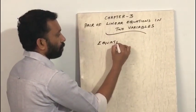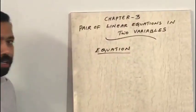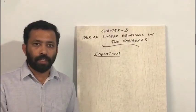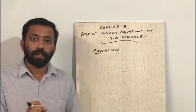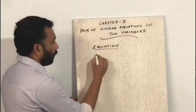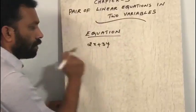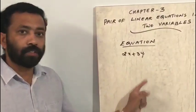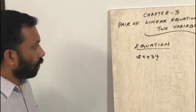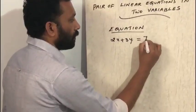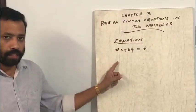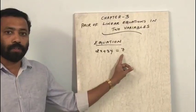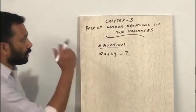An algebraic expression involving an equal to sign is called an equation. For example, 2x plus 3y is only an expression — it is not an equation. Instead, if we write 2x plus 3y is equal to 7, it is an equation, because this is an algebraic expression involving an equal to sign.